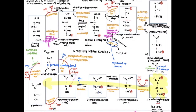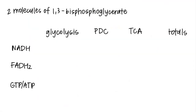Because we start with two molecules of 1,3-BPG, we make two ATP at PG kinase and another two at pyruvate kinase. So on this chart we make four ATP, zero FADH2, and zero NADH.